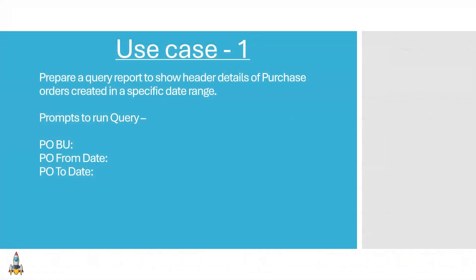Now let's see this use case. We have a requirement to prepare a query report to show header details of purchase orders created in a specific date range, and that date range is not fixed. That's why we need to include three prompts in the report: the first prompt is PO business unit, the second is PO from date, and the third is PO to date. For example, a user can run this query for business unit TS001 with purchase orders created from 1st January 2023 to 1st April 2023.